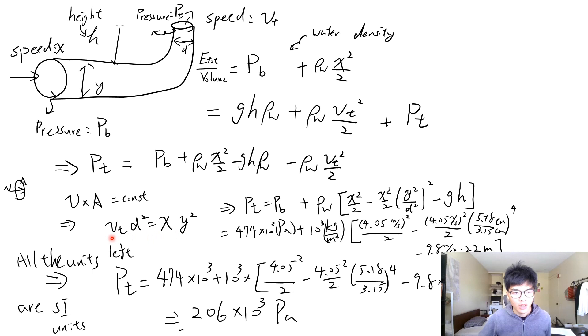So we have this relation: the speed of flow at top times the diameter of the pipe at the top, which is d squared, equals the speed of flow at the basement times the diameter of the pipe in the basement, y squared. And so this y is 5.18 centimeter and d is 3.15 centimeter, take the square.